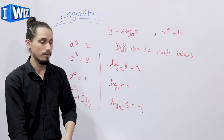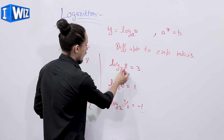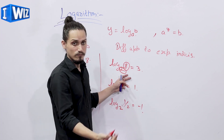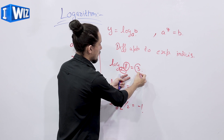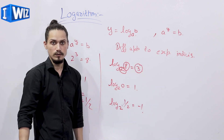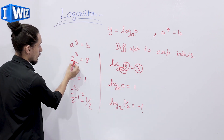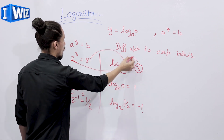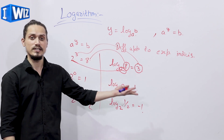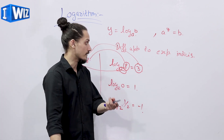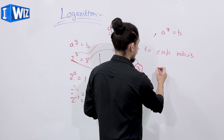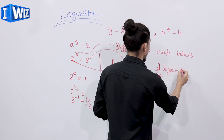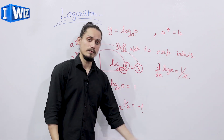Basically, logarithmic function implies: if you know how fast you are growing and you know what your biggest value will be after growing, it tells you how much time it took to reach that value. The differentiation of logarithmic function is written as d/dx of log x equals 1 upon x. Now let's look at some examples.